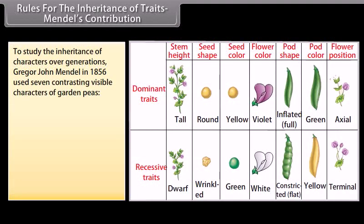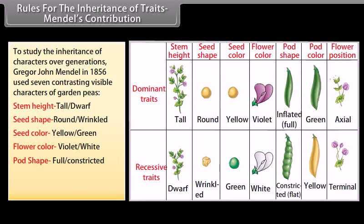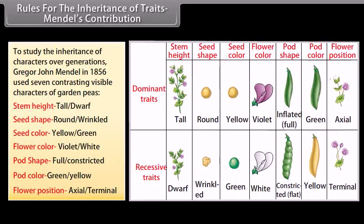Stem height: tall, dwarf plants. Seed shape: round, wrinkled seeds. Seed color: yellow, green seeds. Flower color: violet, white flowers. Pod shape: full, constricted pods. Pod color: green, yellow pods. Flower position: axial, terminal flowers.